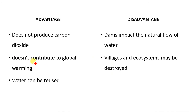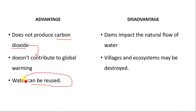Advantages of hydroelectric power: it does not produce carbon dioxide, so it does not contribute to global warming. Water can be reused, so it is a renewable form of energy. However, a dam impacts the natural flow of water, which can affect villages and the ecosystem within the river course. Villages may have to relocate, especially those on the downstream location, and there is also a risk of flooding if the dam collapses.